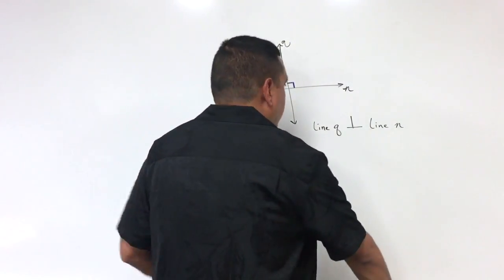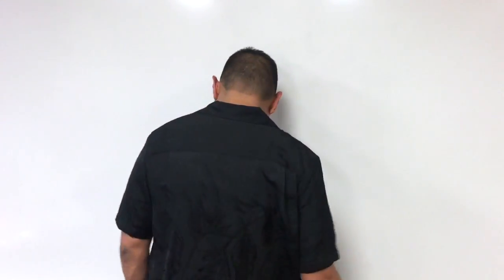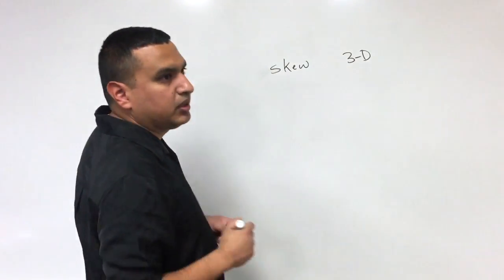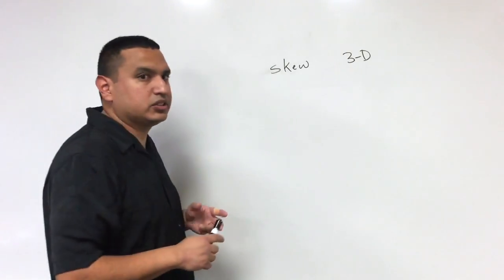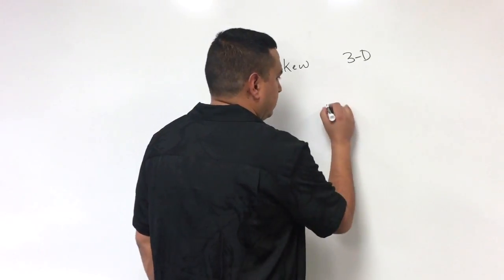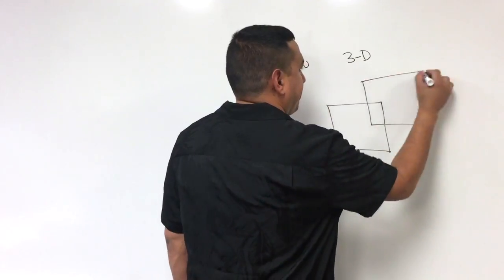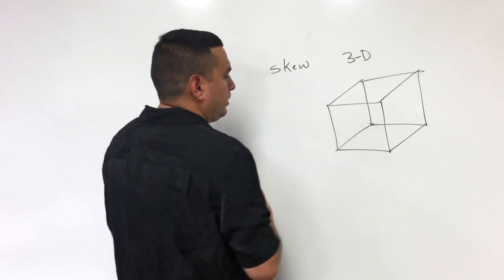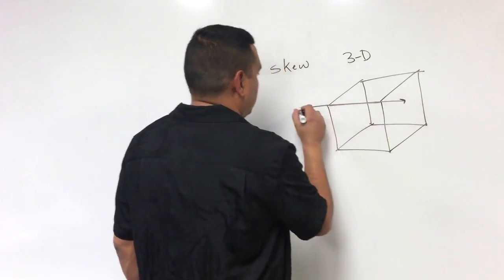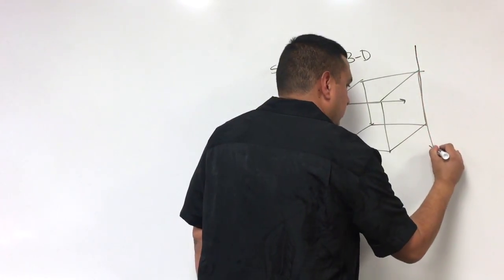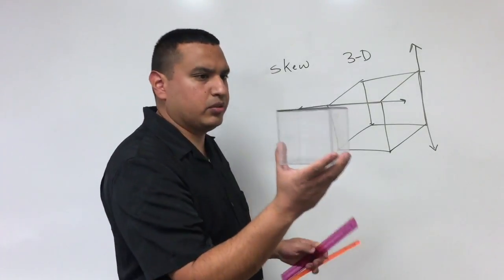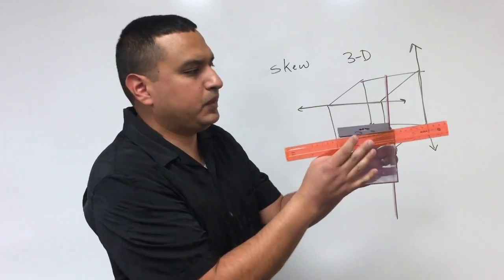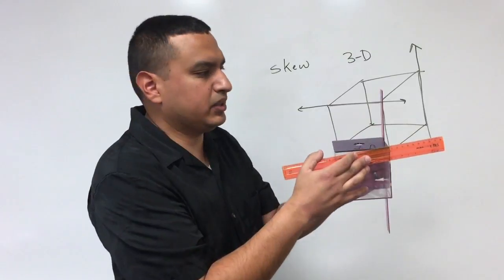The other word we haven't talked about yet is skew. For skew, you want to think 3D. Skew lines are lines that are not parallel but do not intersect. You want to think of something like a cube or some type of three-dimensional prism. One line would be on a different plane than another line. If I pick a line on the back and a line out in front, they're not going to ever intersect but they're not parallel either — they're not going in the same direction.